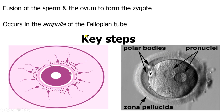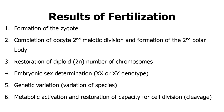Once the zona reaction occurs, it prevents polyspermy, which would lead to a triploid state. The next step is completion of the second meiotic division. The second polar body is formed after fertilization when the second meiotic division occurs. Once that occurs, you have the formation of the pronuclei — the female and the male pronuclei — which fuse and form the zygote. Formation of the zygote is the first result of fertilization.